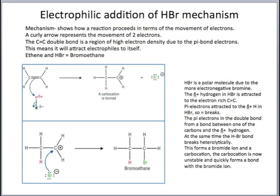The HBr bond breaks heterolytically, meaning both electrons go to the bromide to form a bromide ion. The next step is that the carbocation, once formed, is quite unstable, so it quickly forms a bond with the bromide ion. We show the movement of the two electrons to form the new bond, and the product is bromoethane.